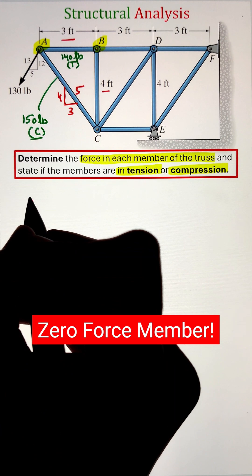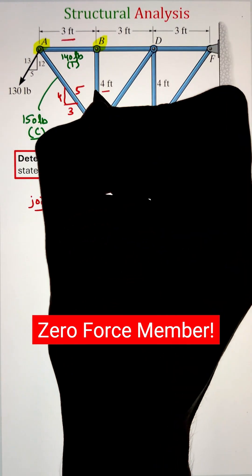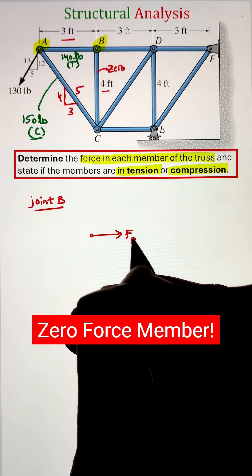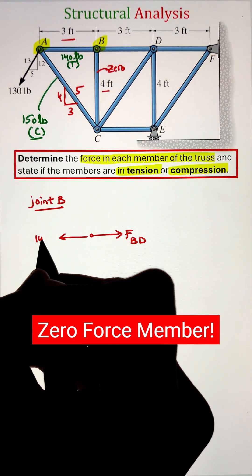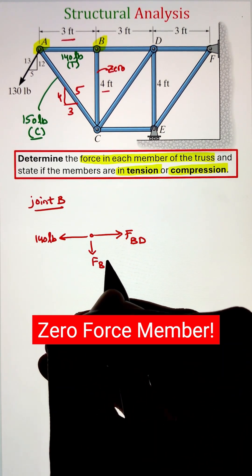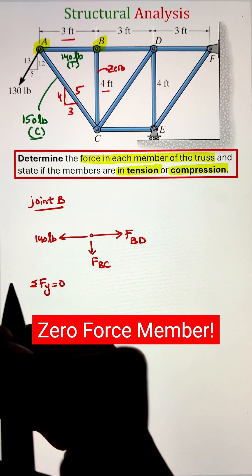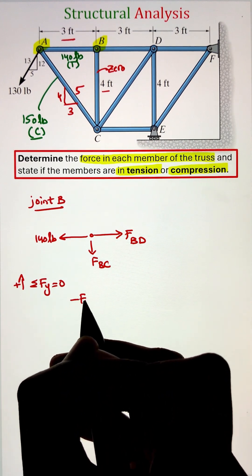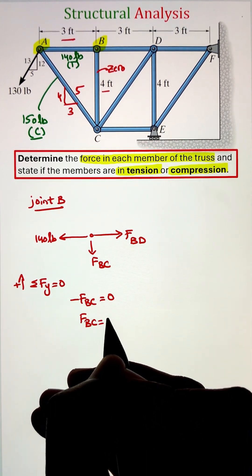Next, move to joint B. Here we have one of the members as a zero force member, which we can prove using a free body diagram. Since two of the members are collinear and there is no external load or support at point B, the third member that is not collinear is going to be a zero force member.